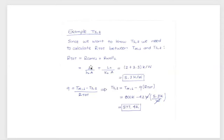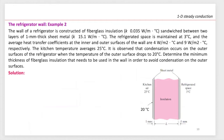Now let's solve another problem to reinforce this concept — a refrigerator wall. We have a wall of a refrigerator constructed of fiberglass insulation with a K value of 0.035 W/m·°C. This insulation is sandwiched between two layers of one-millimeter-thick sheet metal. The metal is going to have a higher K than the insulation because it's a conductor. The K value for the sheet metal is 15.1 W/m·°C.